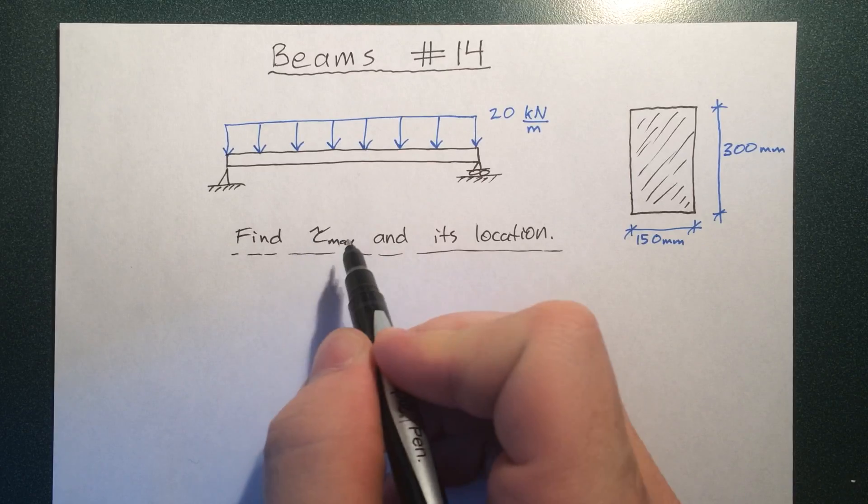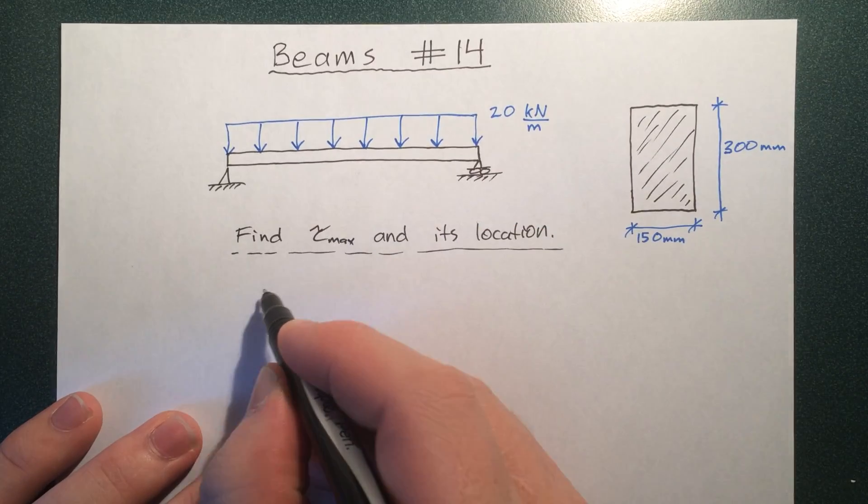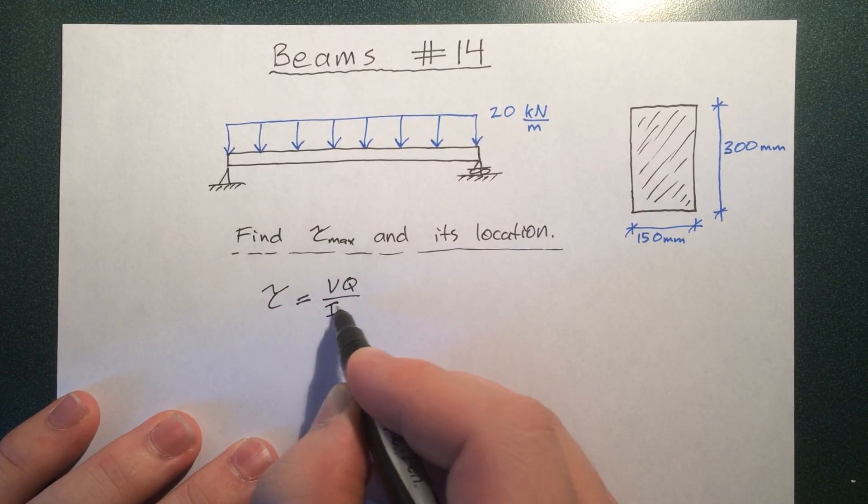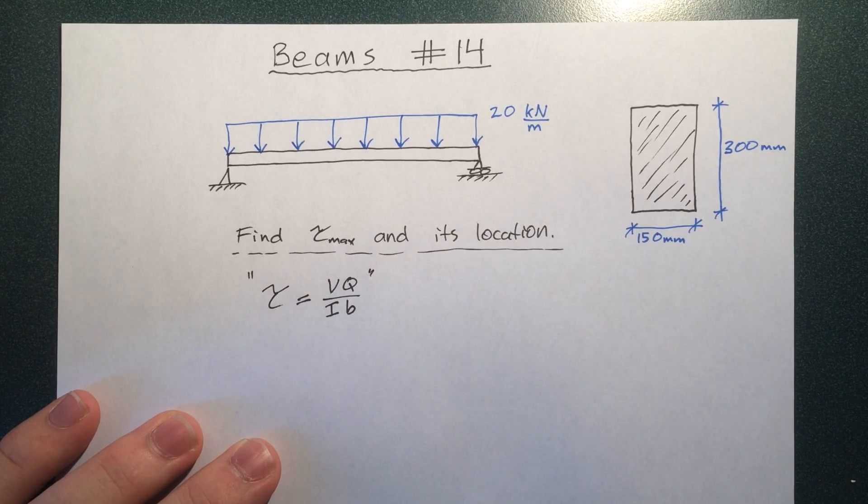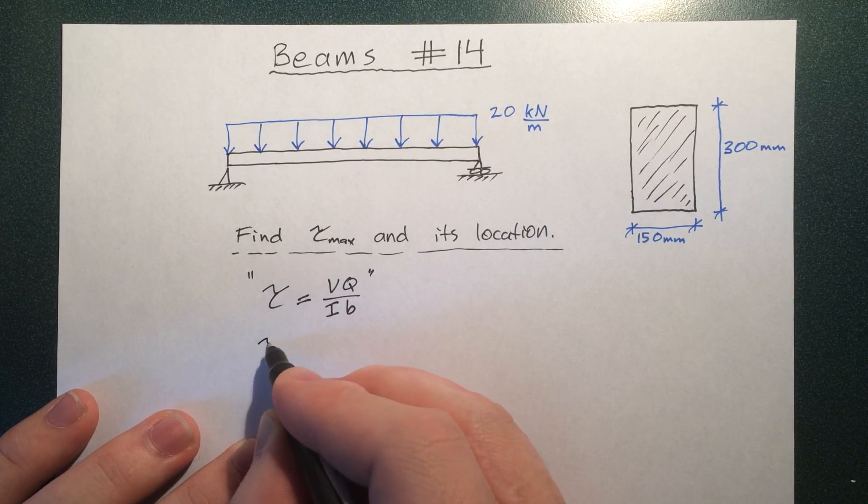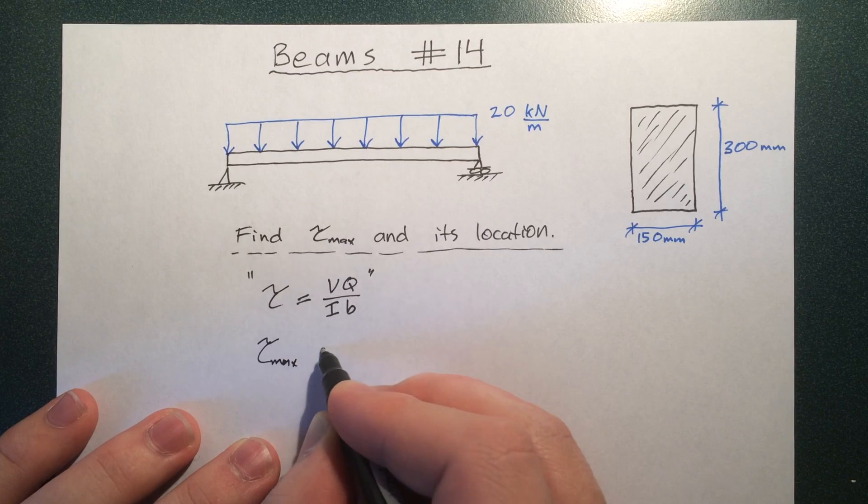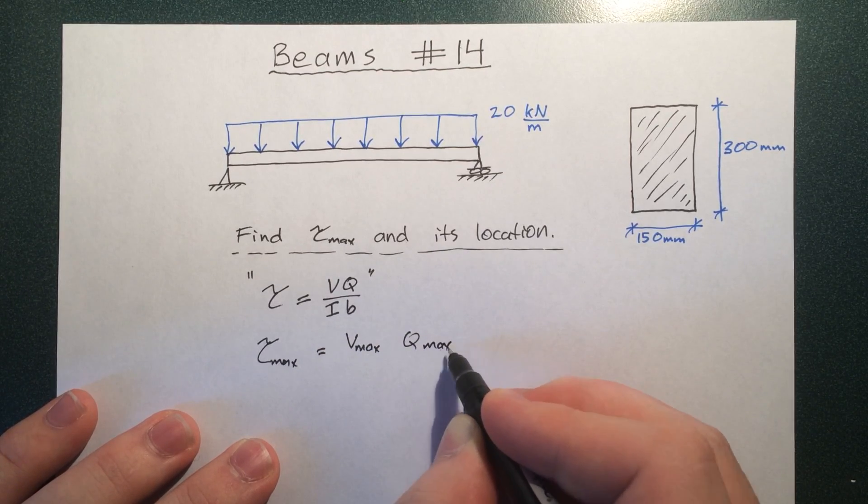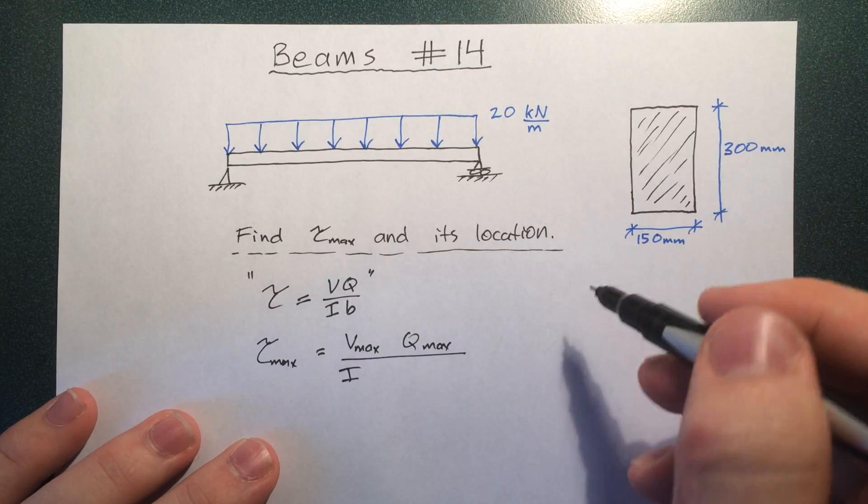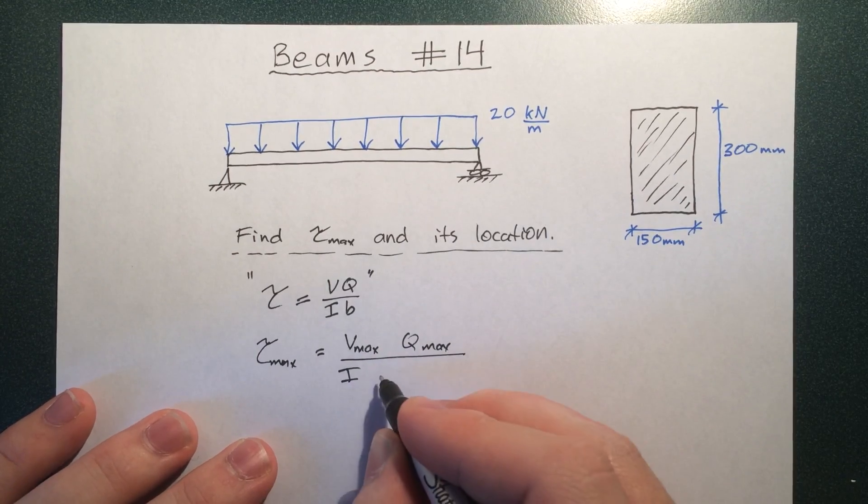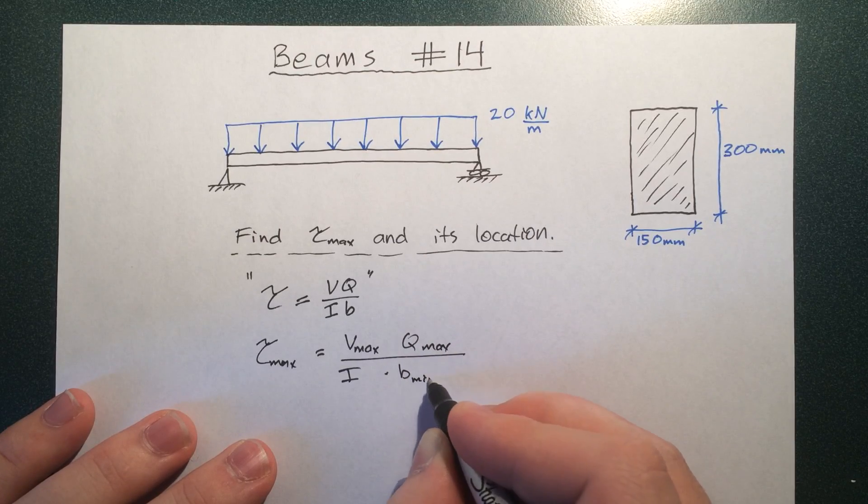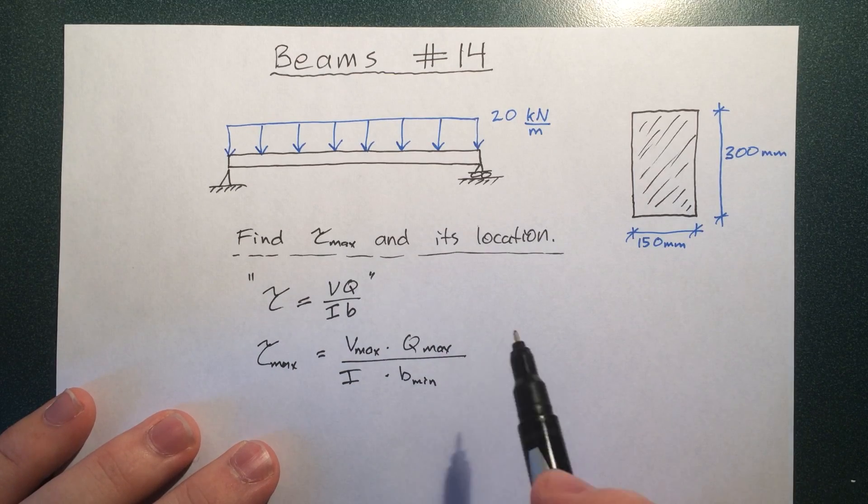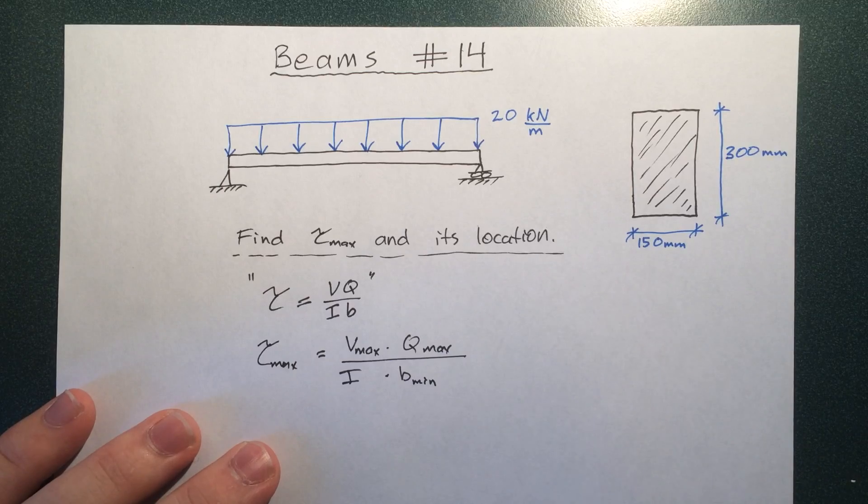If you want to find tau max, or the shear stress, we need to use this equation here. That's the equation that we've seen previously. If we want to find the shear max, it means we need to find V max, Q max, over I, that's the same for our cross section, times B minimum. Because the smaller this is, the bigger this whole value becomes. So now let's just go ahead and solve for each one of these four variables.